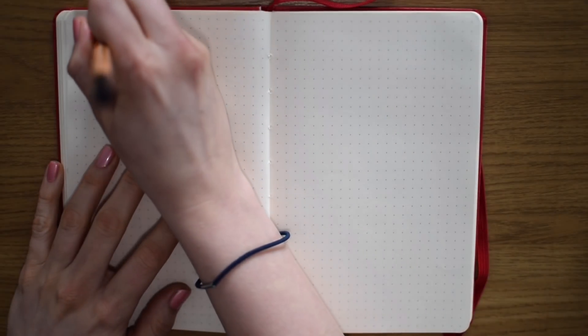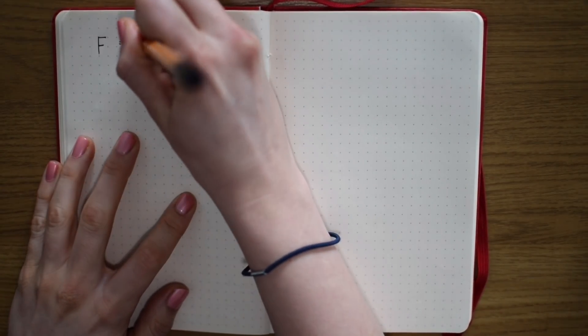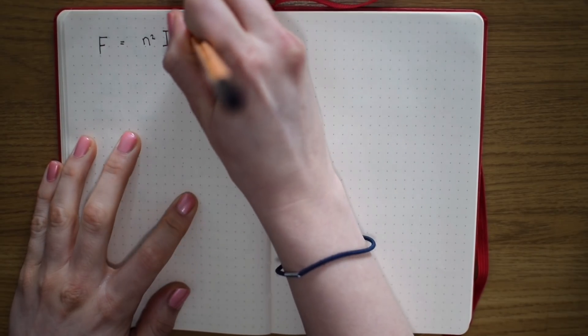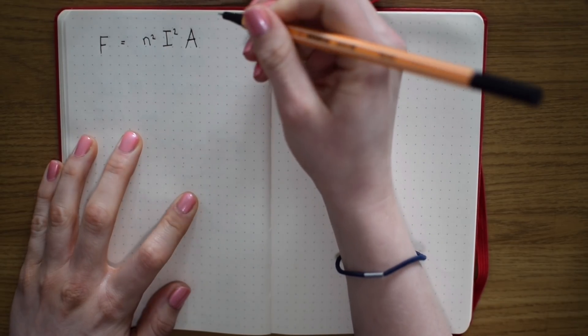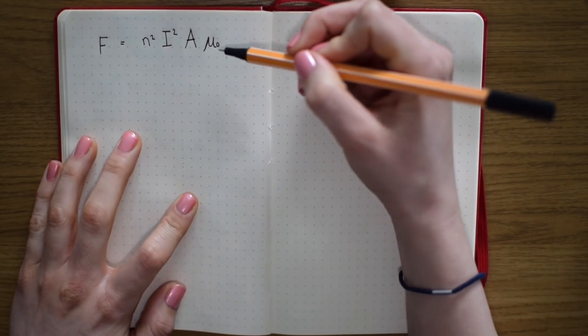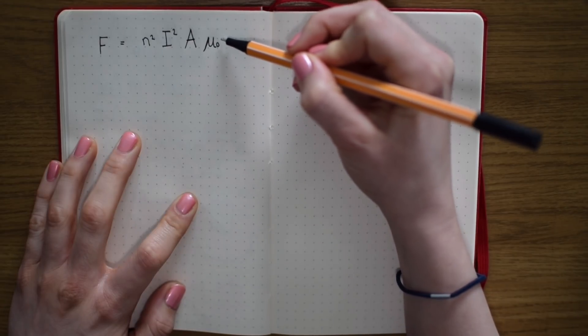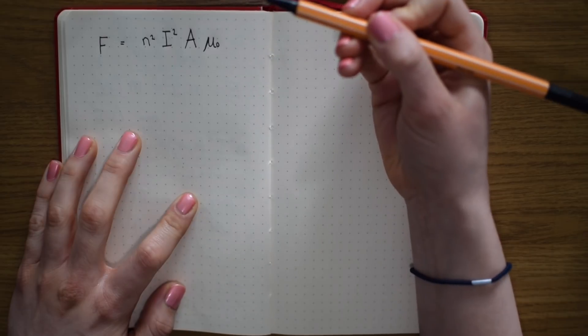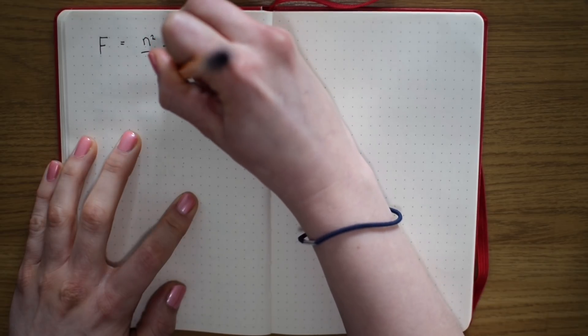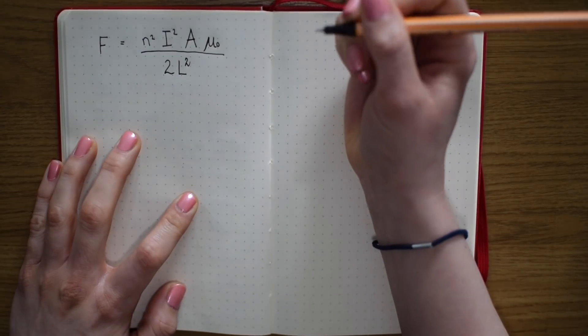So thankfully, the force that an electromagnet like that can apply to a piece of metal or the iron core of the moon is actually really well known. It's a very well known equation and it looks a little bit like this. The force is equal to the number of coils that you have, squared, times by the current running through those coils of wire, squared, the cross-sectional area of the magnet you have - i.e. how big is your magnet - times again by the permeability of free space or a vacuum. So essentially how permeable is empty space to a magnetic field running through it? And that's all divided by two times by the distance between the magnet and the piece of metal you're trying to attract, squared.